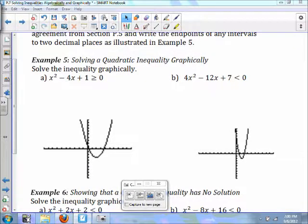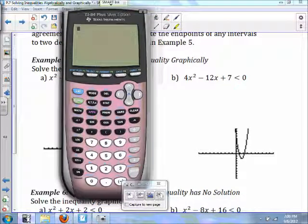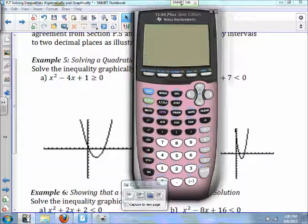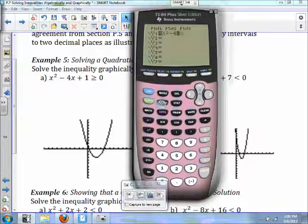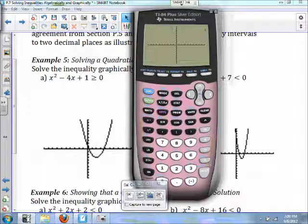We're going to solve this graphically. The first thing you need to do is turn your calculator on. We're going to put in x squared minus 4x plus 1. You're going to graph it.